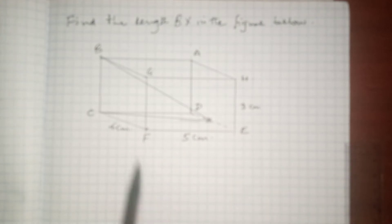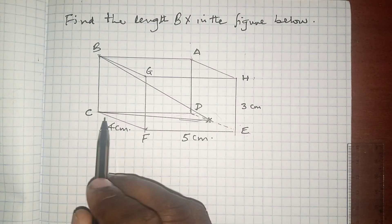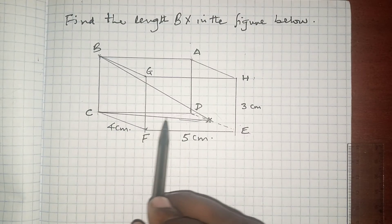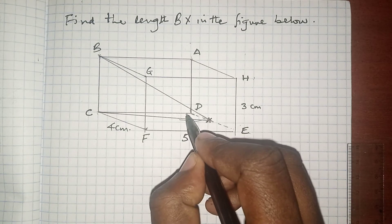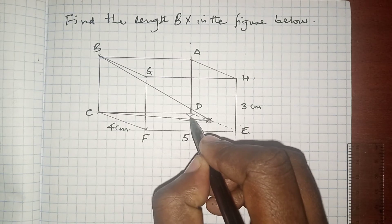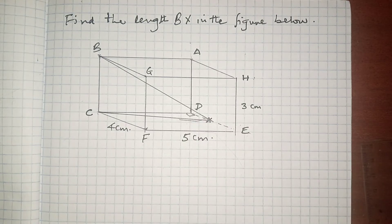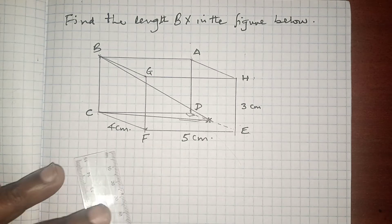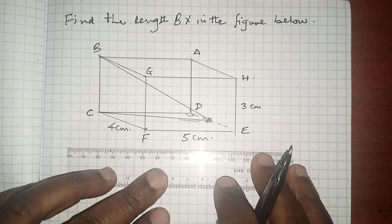Because we cannot directly calculate CX, we need to realize that CDX is a right angle triangle where the angle at vertex D is 90 degrees. So we can extract that triangle and bring it here so that we can work with it.